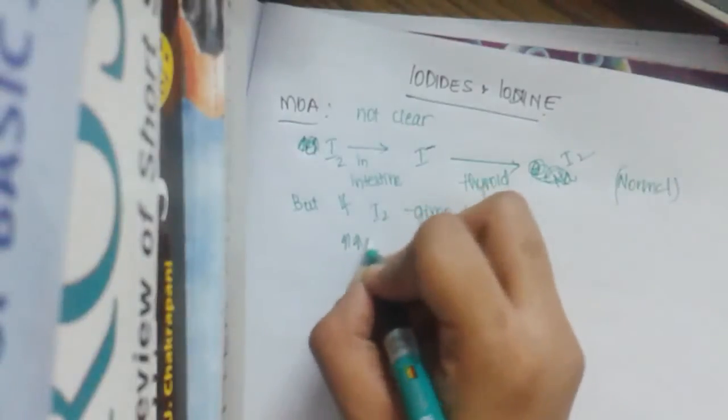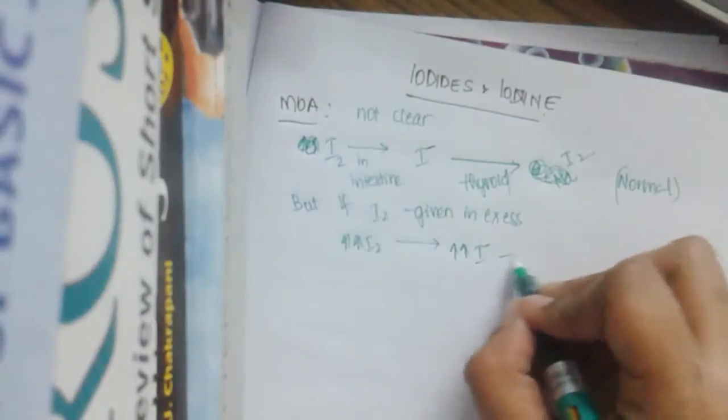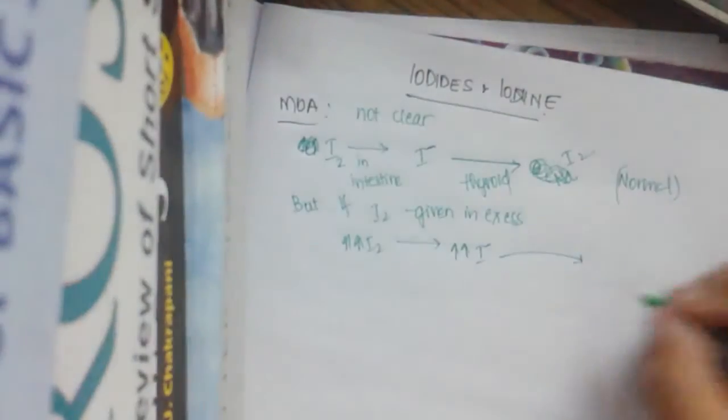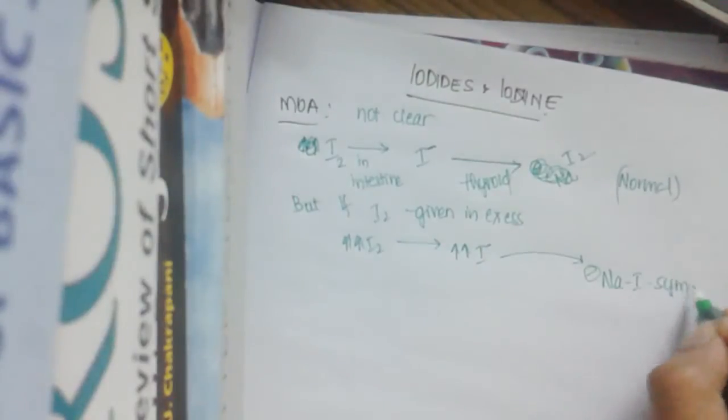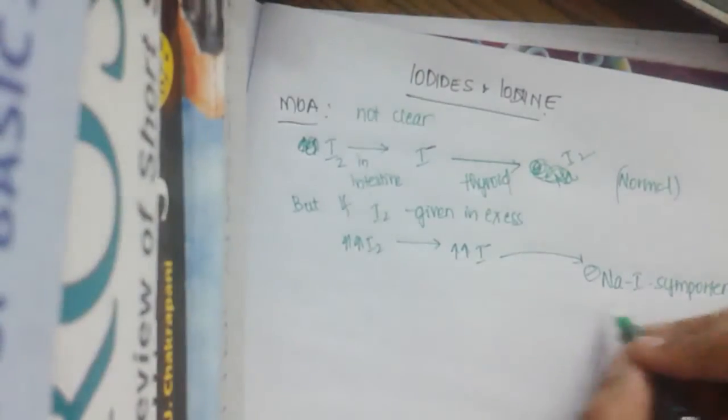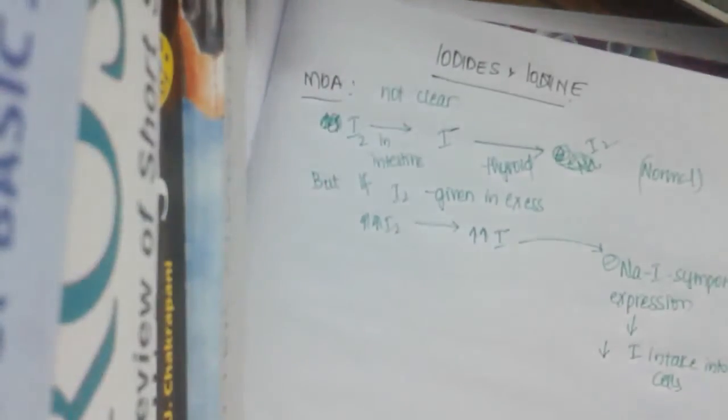Then increased iodine increases its iodide conversion. This iodine to iodide, when very much increased, inhibits sodium iodine symporter expression. Thus this leads to decreased iodine intake into cells.